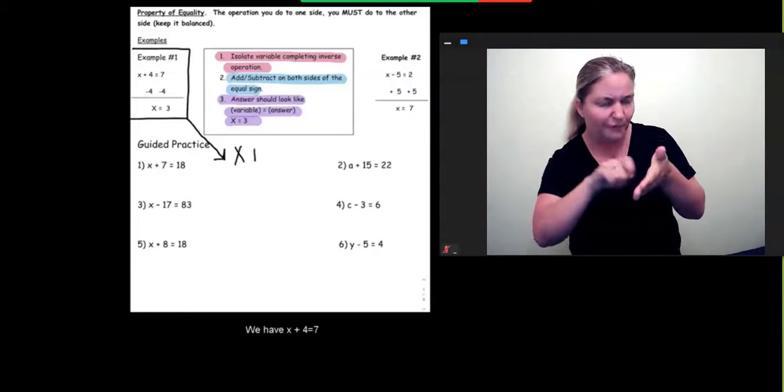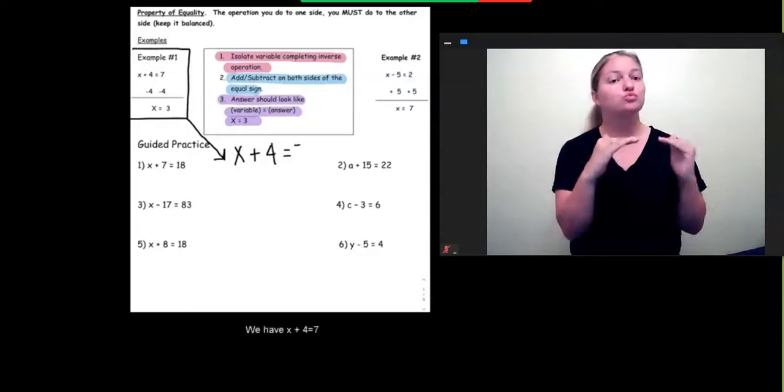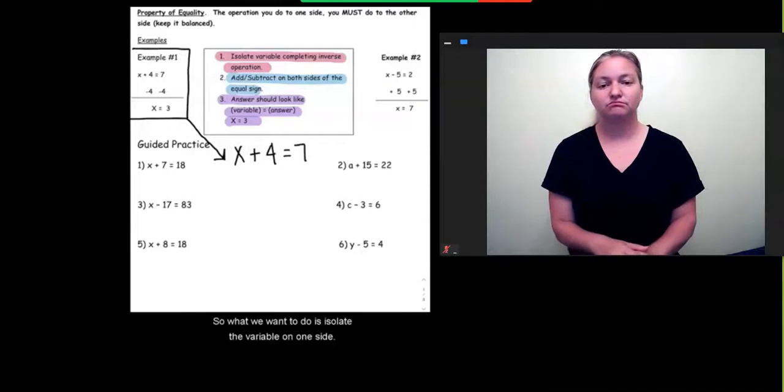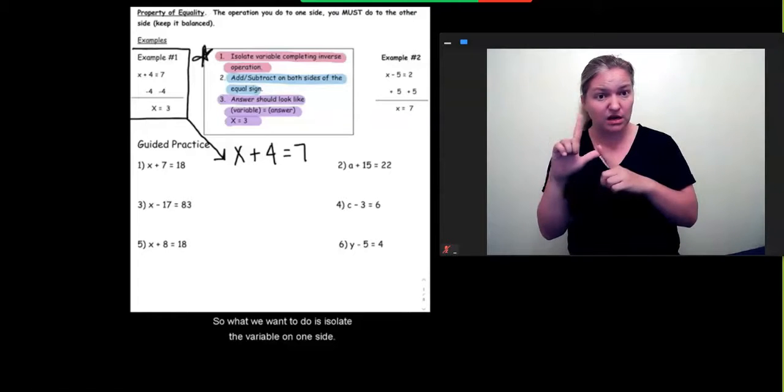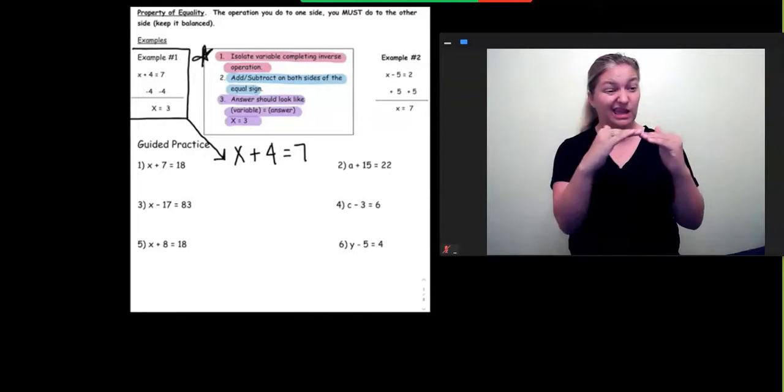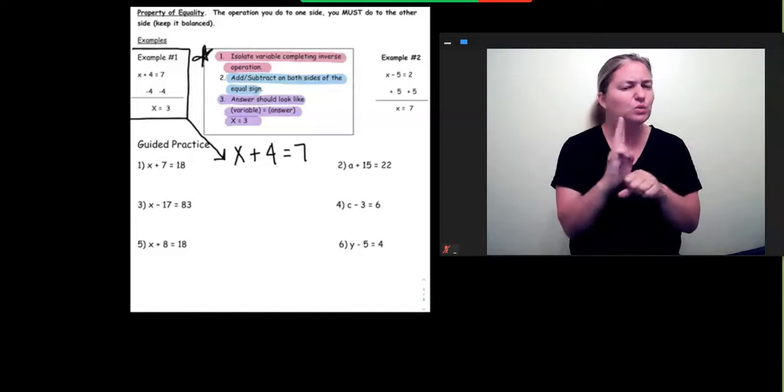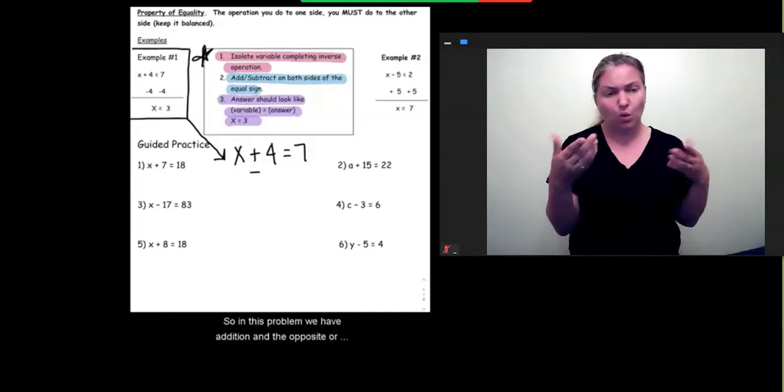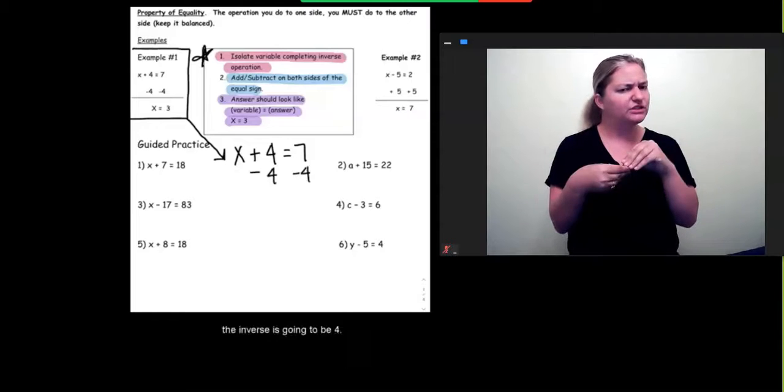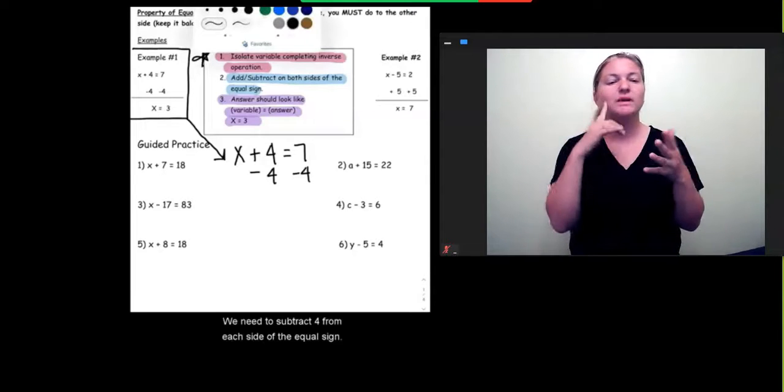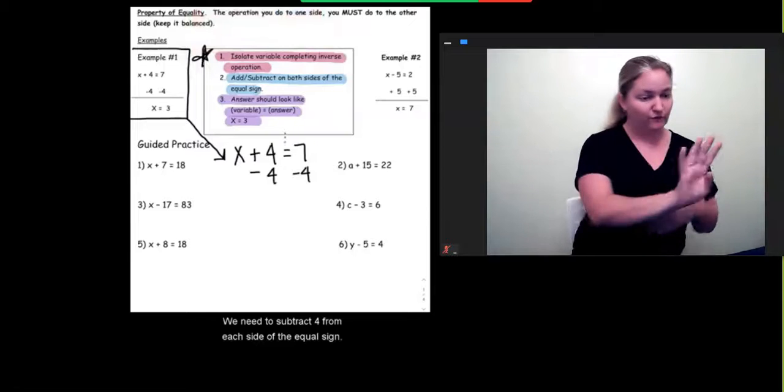We have x plus 4 equals 7. So what we want to do is isolate the variable on one side of the equal sign using the inverse operation. So in this problem, we have addition, and the opposite, or the inverse, is subtraction. We need to subtract 4 from each side of the equal sign.